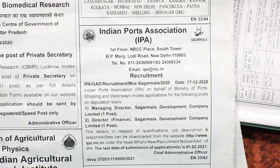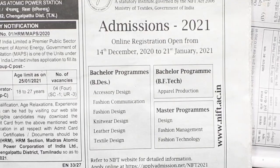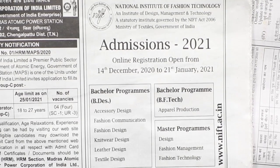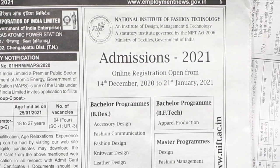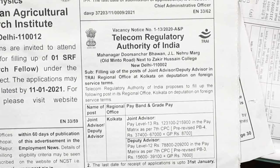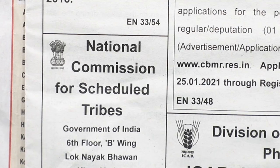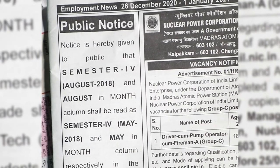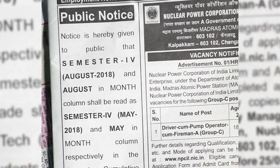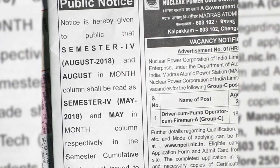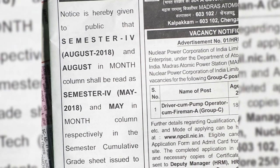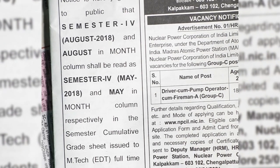This is from Indian Ports Association. This is National Institute of Fashion Technology admission for the year 2021. Then this is the Telecom Regulatory Authority. A National Commission for Scheduled Tribes — this is a public notice also. Notice is hereby given to the public that semester 4 and August month shall be read as — because previously they gave an advertisement, there was some mistake, some errors they are rectifying. So these are all advertisements; some of them are public notices.